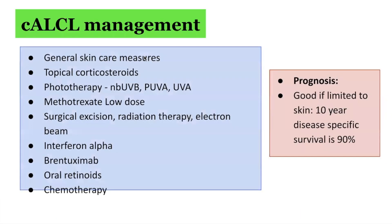In terms of management, radiotherapy and surgical excision are often considered as initial treatment options for patients presenting with solitary or few localized nodules or tumors. If a solitary lesion disappears spontaneously, no further therapy is required. Patients with multifocal skin lesions may be best treated with radiotherapy if few lesions, or else low-dose methotrexate, oral retinoids, or interferon-alpha. For patients who present with or develop extracutaneous disease, or those rare patients with rapidly progressive disease, doxorubicin-based multi-agent chemotherapy should be used. There is also evidence for brentuximab, a CD30-targeted biologic, as a potential option. This concludes the presentation on lymphomatoid papulosis and cutaneous anaplastic large cell lymphoma.